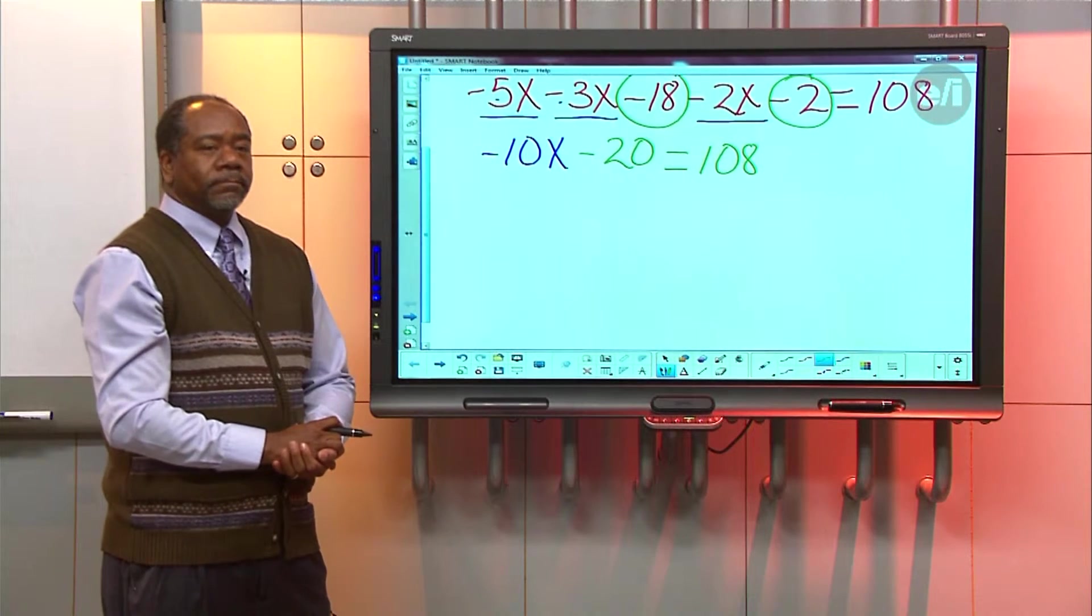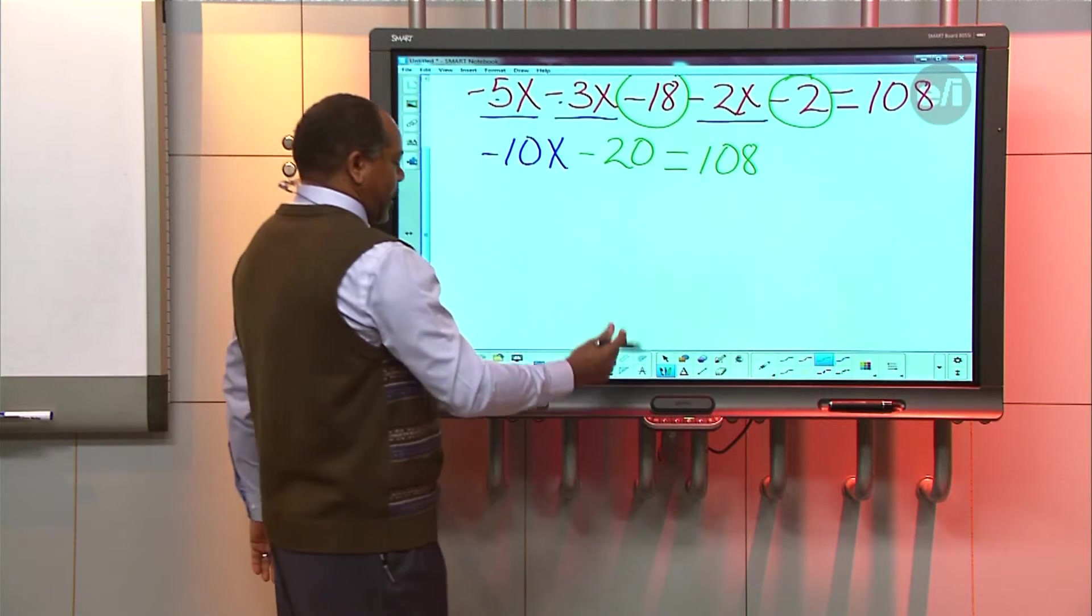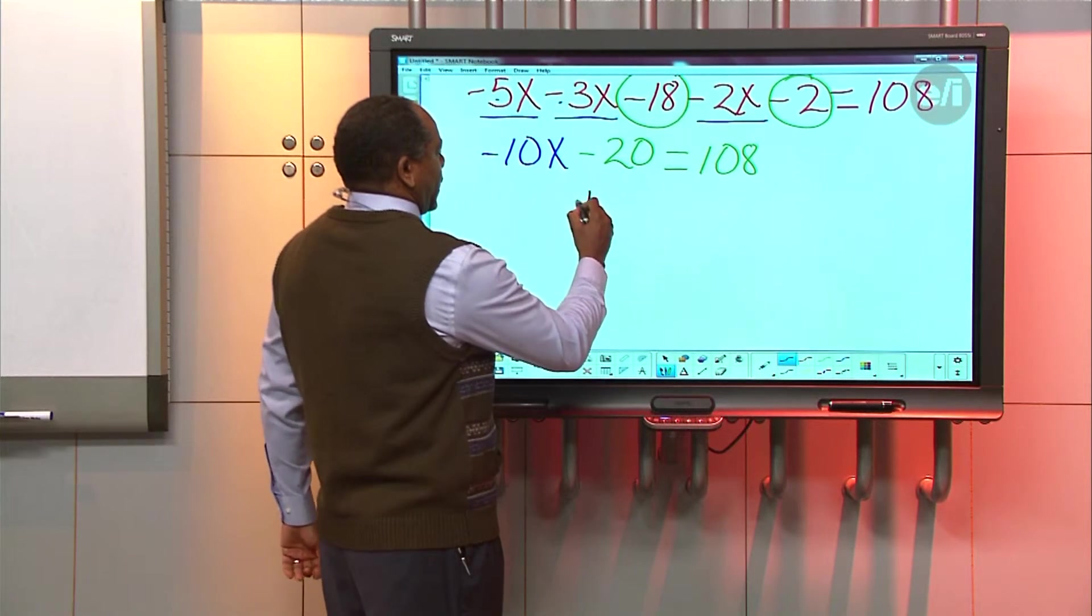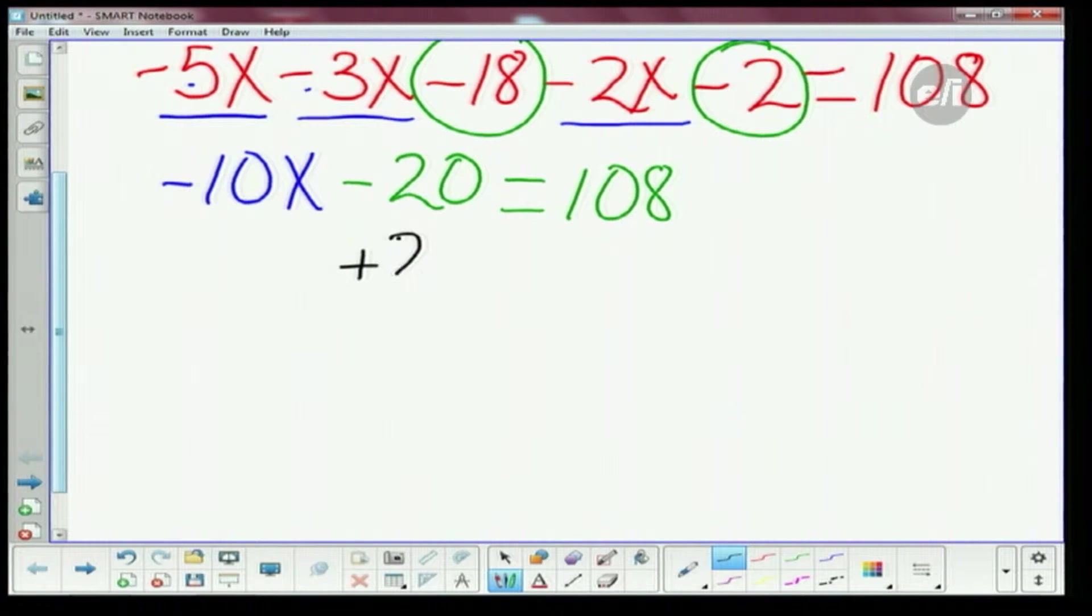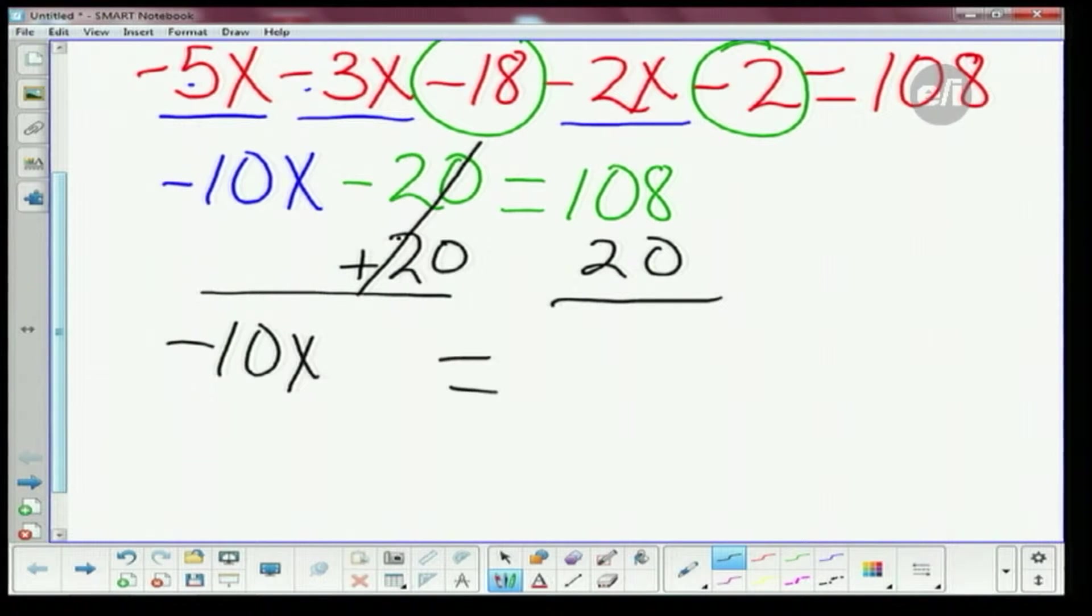What do you think our next step might be? Add 20 on both sides. Very good. Your teacher, you need to let your teacher know you're doing a great job. So I'm gonna add 20 to both sides. I'm gonna bring straight down my negative 10X. Minus 20 and plus 20, they cancel. They cancel each other out. 100 plus 20 is 128.